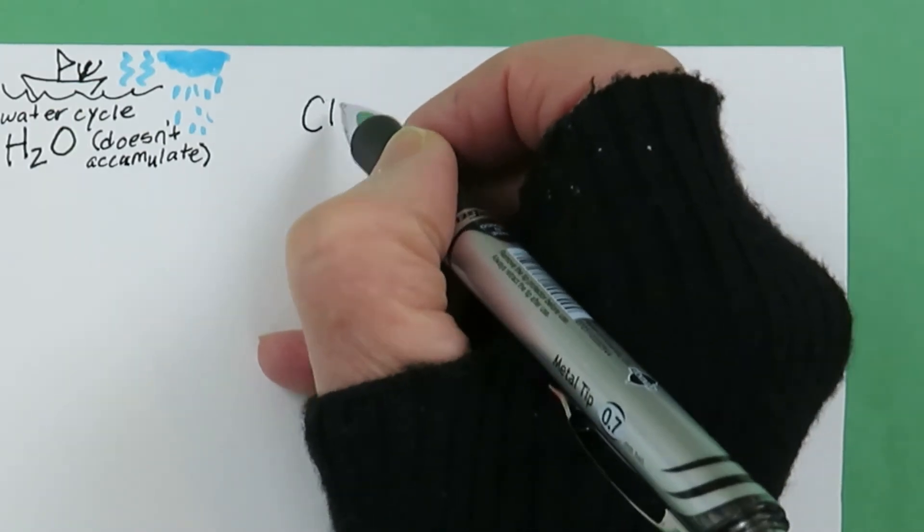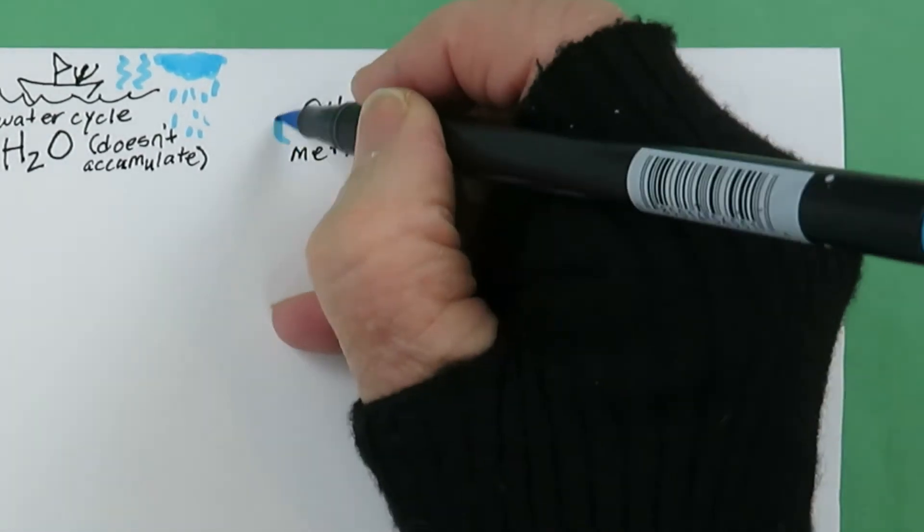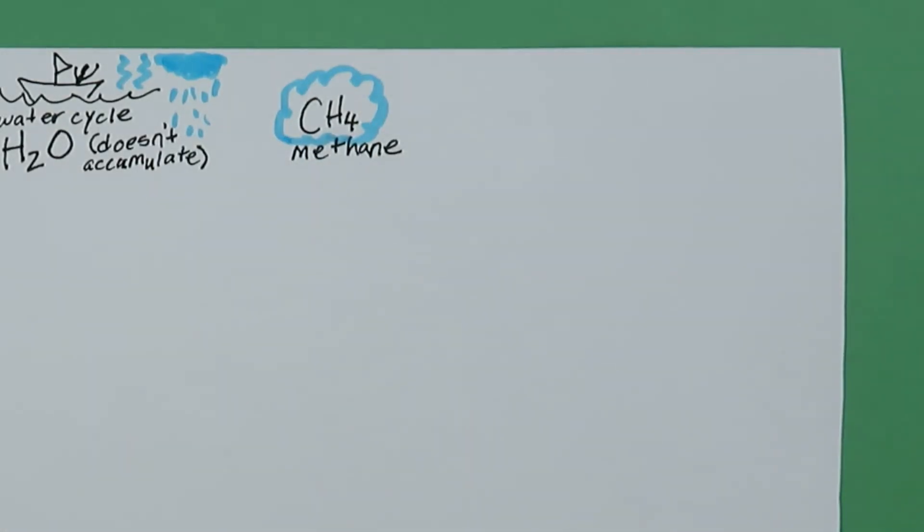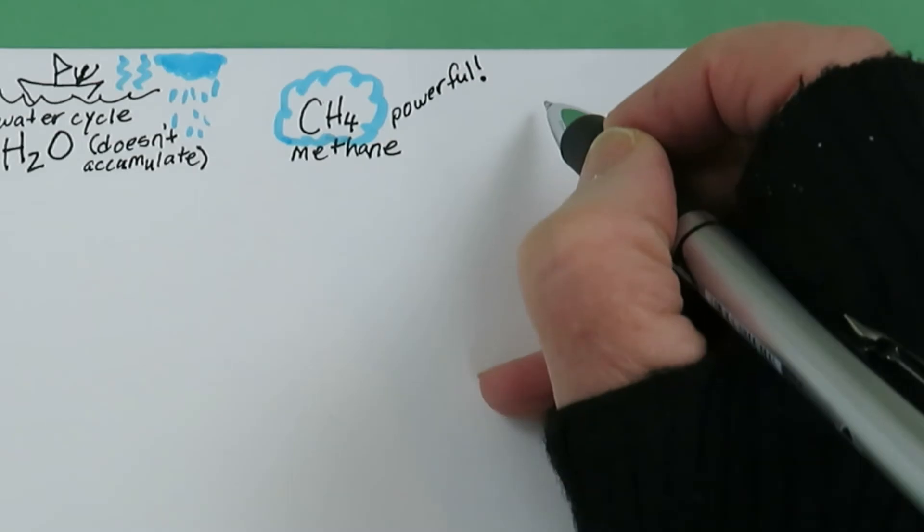Another important greenhouse gas is methane, CH4. It's actually a more powerful greenhouse gas than CO2, but it only lasts a few decades in the atmosphere, and there's a lot less of it up there.